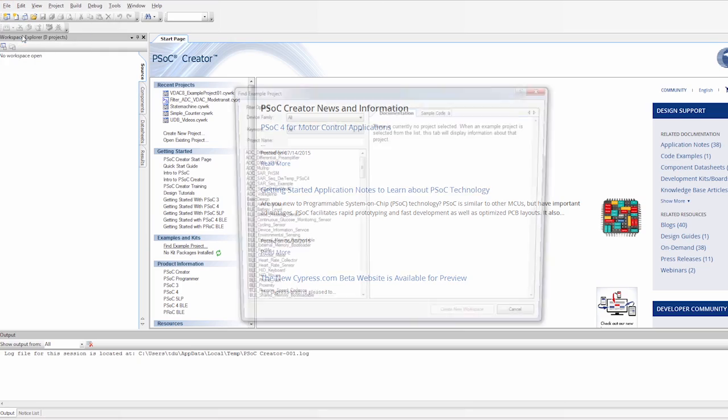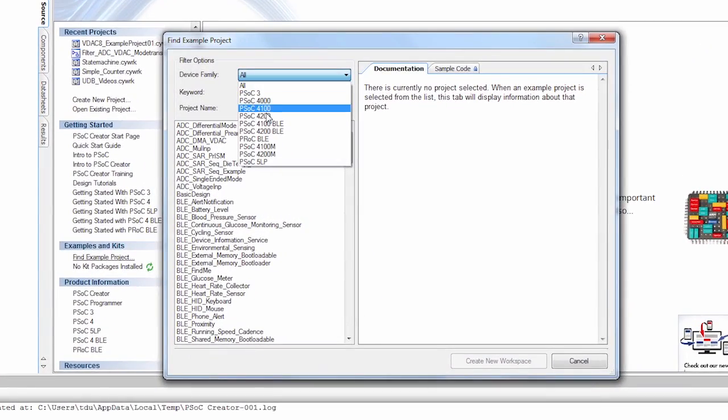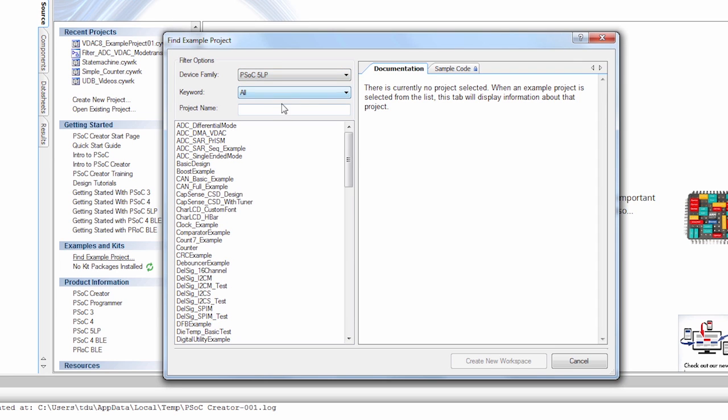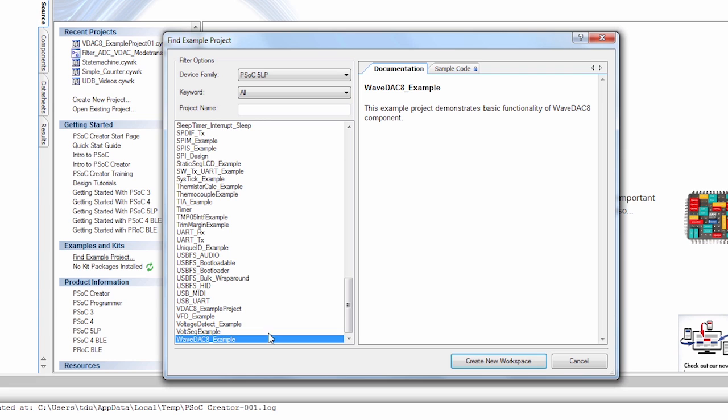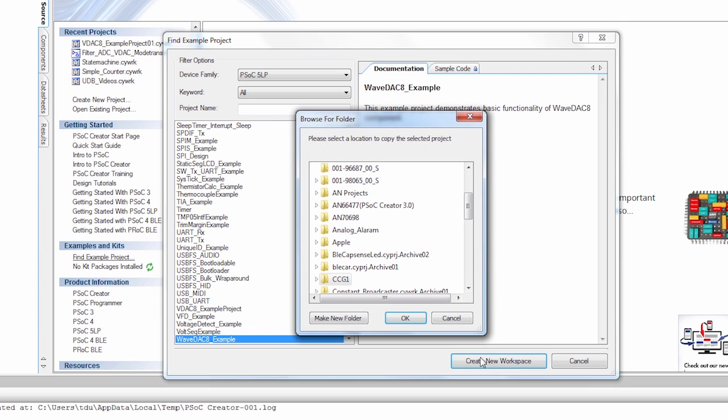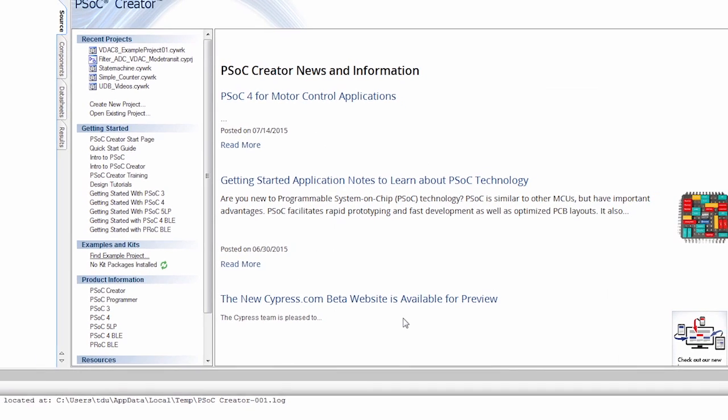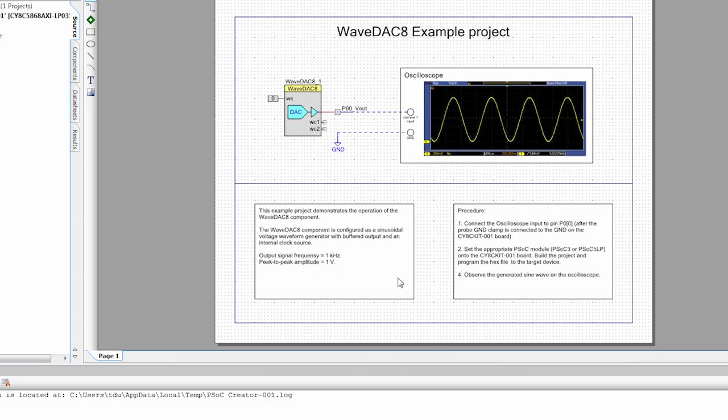If you go to File, Example Projects, I'm going to choose the PSOC 5LP device family, and I'm going to go down here to find the WaveDAC 8 example. I'm going to create a new workspace, save this to my desktop.